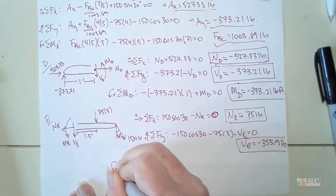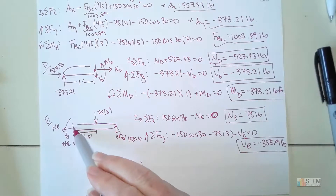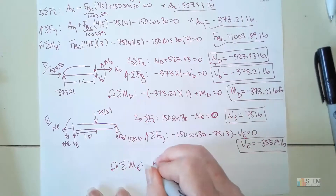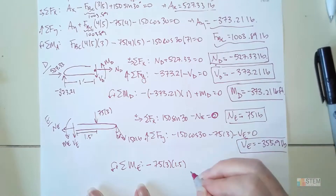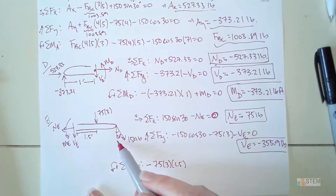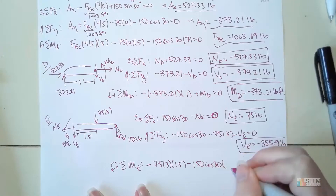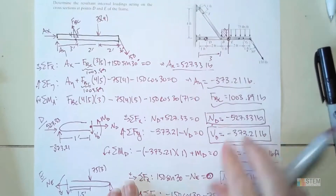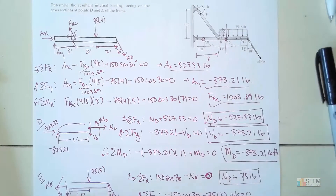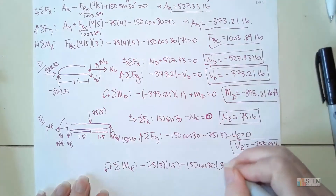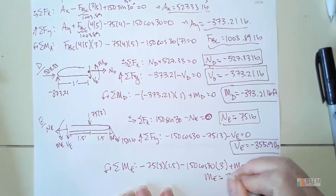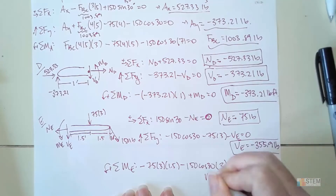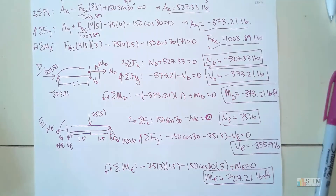Finally, the moment about point E: negative 75 times 3 times 1.5 (clockwise), minus 150 cosine 30 times 3 (negative), plus ME equals zero. So ME equals 727.21 pound-feet. That's the end of that one. Hopefully y'all found that helpful, and I'll see you in the next one.